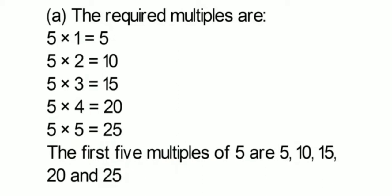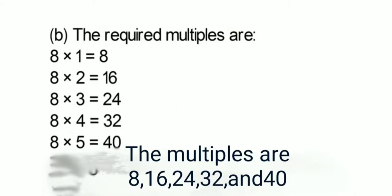We have to write the first 5 multiples, that's why we start from 1. For number B, which is 8: 8 into 1 is 8, 8 into 2 is 16, 8 into 3 is 24, 8 into 4 is 32, 8 into 5 is 40. So the first 5 multiples of 8 are 8, 16, 24, 32 and 40.